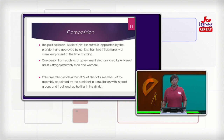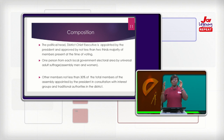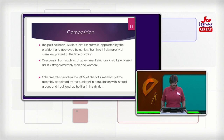In addition, the member of parliament for that area is also a member of the district assembly. There could be one or two members of parliament for the area, but the member of parliament is also part of the district assembly composition.